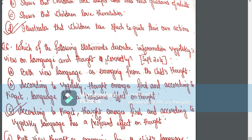Which of the following statements describes Vygotsky's view on language and thought correctly? According to Piaget, thought emerges first. According to Vygotsky, language has a profound effect on thought. That is option C. Thank you.